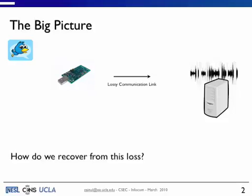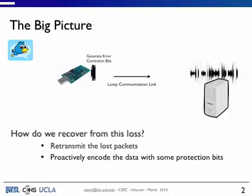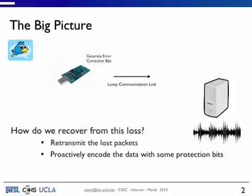Typically, you will do a retransmission so you'll know which ones you missed and you'll send just those packets. That's one way. The second way is to do some sort of forward error correction. So what you do is you generate some error correction bits before you send out your data. And then you send out those error correction bits. And hopefully they all reach the other side. And through some decoding mechanism, you'll get your original signal back. So the question we wanted to ask was, can we do anything better than this?